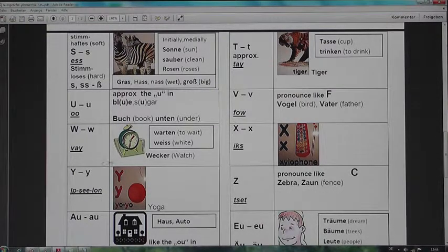W, in a word like watch, Wecker, alarm clock, warten, to wait, weiß, the color white. X, only a few words, like in a word xylophone. Y, the Y in a word like yoga. Last letter, Z, you speak it hard, pronounced like the C in words. Zebra, Zaun, fence.